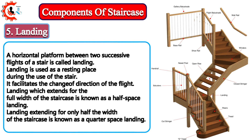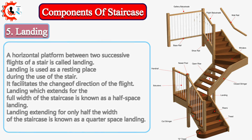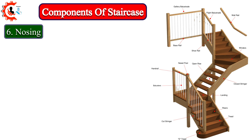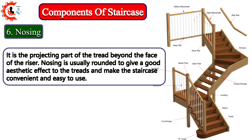Landing which extends for the full width of the staircase is known as a half-space landing. 6. Nosing: It is the projecting part of the tread beyond the face of the riser. Nosing is usually rounded to give a good aesthetic effect to the treads and make the staircase convenient and easy to use.